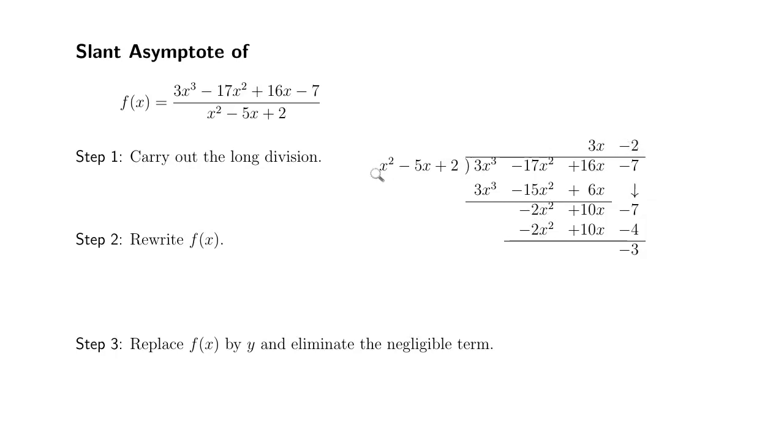So negative 2 times x squared gives you negative 2x squared. Negative 2 times negative 5x gives you 10x. And a negative 2 times positive 2 is negative 4.